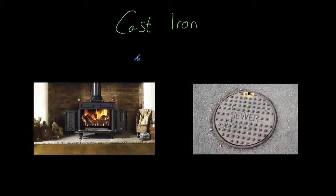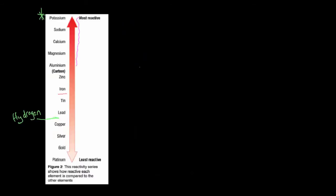In the previous video we saw that metals can be extracted in different ways depending on how reactive they are. Now iron is a metal which is less reactive than carbon, and we can see that by looking at our reactivity series. Here we have carbon and below it is iron, so iron can be displaced by carbon.